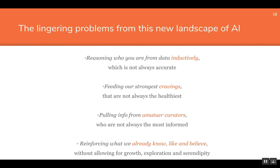Algorithms are also pulling information from amateur curators who are not always the most informed. Instead of seeing something edited by professional editors, we're seeing people pulling together sites they think are interesting but who aren't necessarily trained or experienced in weeding out things that shouldn't be shared. And it's reinforcing what we already know, like, and believe. It's based on what we've liked in the past, so it gives us more of what we like — not really allowing for any kind of growth, exploration, or serendipity. This is a problem especially with entrepreneurial spirit: if we're looking for data to enhance a new idea, we don't want to be looking at Google because that's only going to reinforce what's already been done.